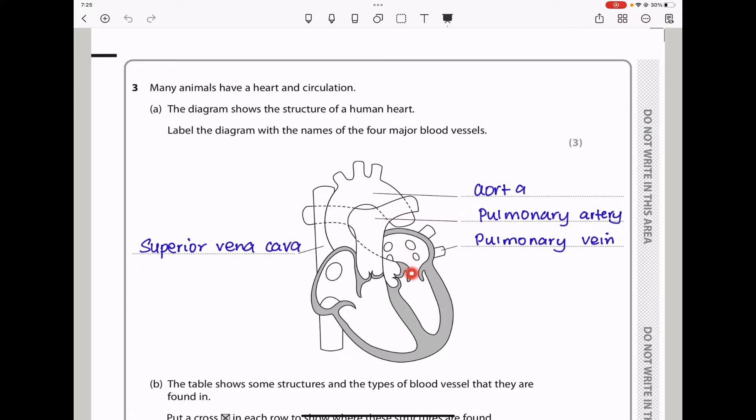Now when we see this part here, this is connected to this blood vessel here, which is called the aorta. This one here is the vena cava, which is the superior vena cava, because this one is the inferior vena cava. So the answer should be aorta, pulmonary artery, pulmonary vein, and the superior vena cava.